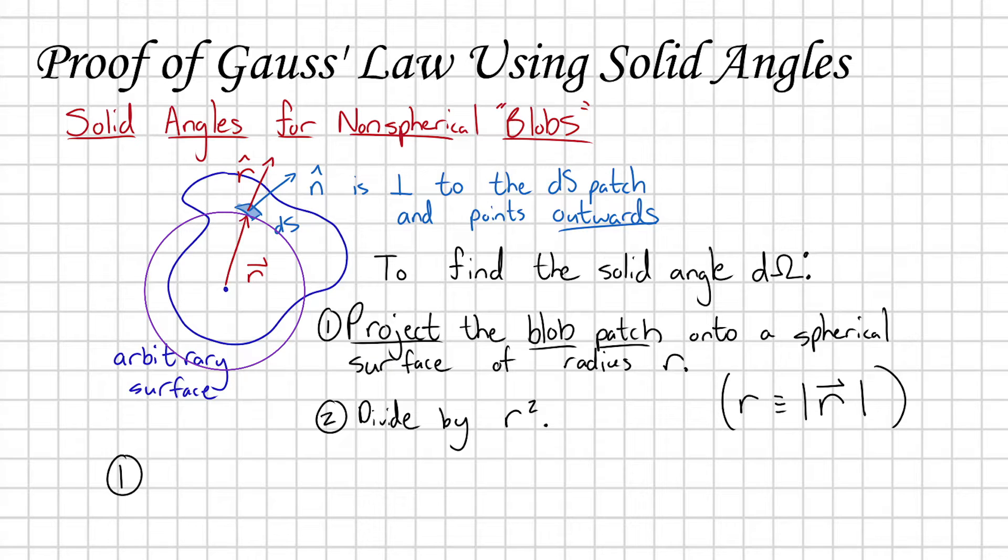So in order to complete step one, we're going to use a dot product. If I define a vector dS n hat, and I dot it in the r hat direction, then that is going to project the dS n hat vector onto the r hat unit vector. And that's exactly what we want.